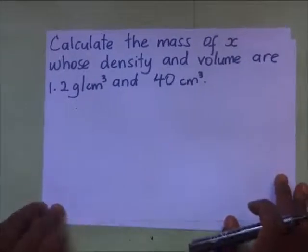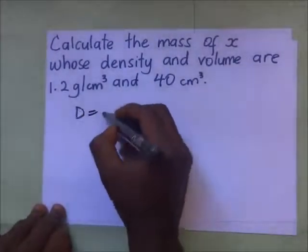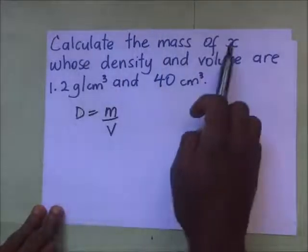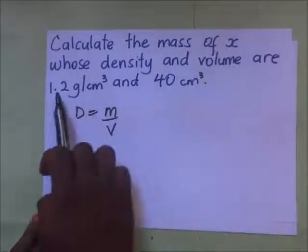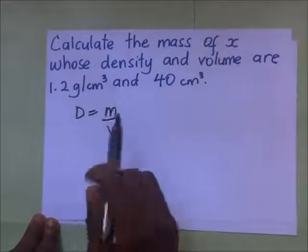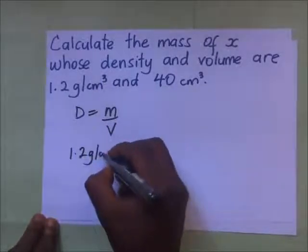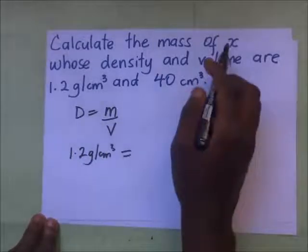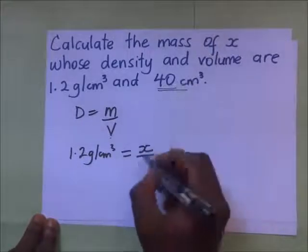Calculate the mass of X whose density and volume are given. We know that density equals mass over volume. We are looking for the value of M, the mass, whose density is 1.2 grams per centimeters cubed. So the density, 1.2 grams per centimeters cubed, equals the mass X over the volume of 40 centimeters cubed.